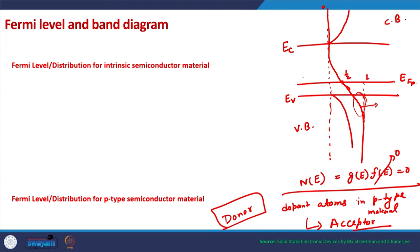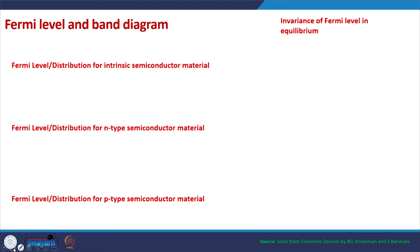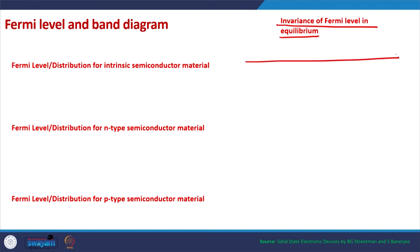We are now at the last key point on the Fermi function: the Fermi level is invariant in equilibrium. When the system is in equilibrium, the Fermi level across the entire system — across the entire device or semiconductor — is invariant. It is a single energy level; it does not bend or change its value. The Fermi level is invariant across a semiconductor that is in equilibrium.